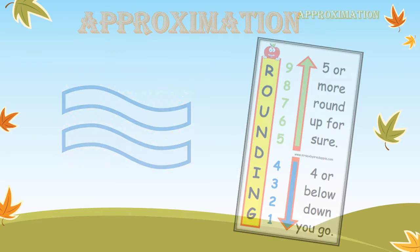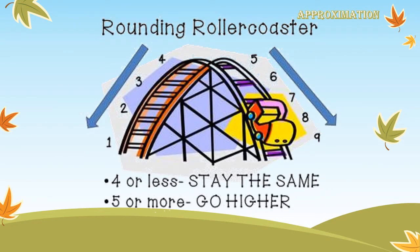Let's have another example. But before that, let's identify this — it's a rounding coaster, and it's very famous. This coaster tells me that if you want to approximate any number and the digit in the place before it is 4 or less, keep the number the same. If the digit in the place before it is 5 or more — 5, 6, 7, 8, 9 — add 1 to the place you want to approximate.